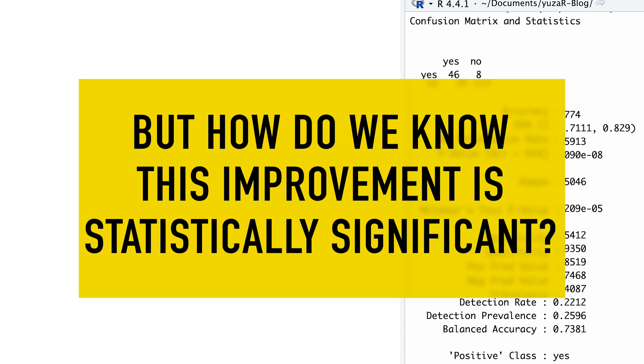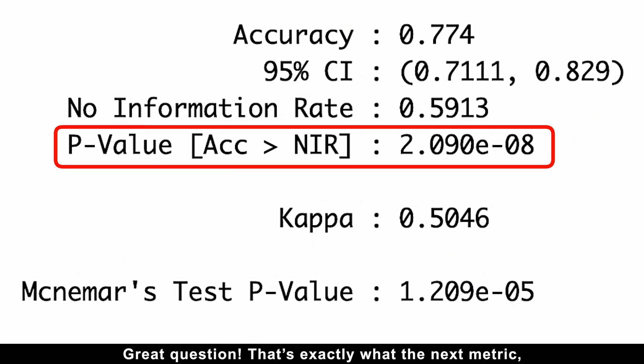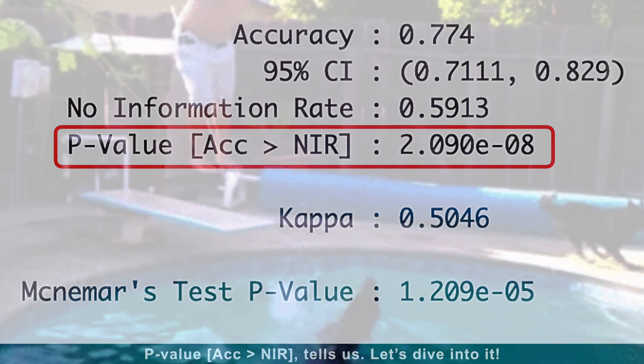But how do we know this improvement is statistically significant? Great question! And that's exactly what the next metric p-value tells us. Let's dive into it.